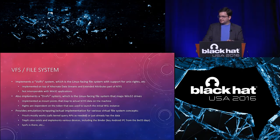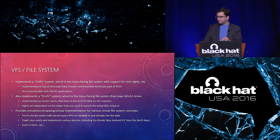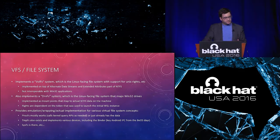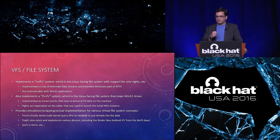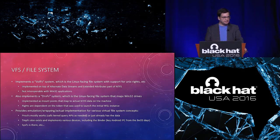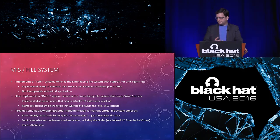The second file system model is called DriveFS or DRVFS, which is the Linux-facing system that maps your Win32 drives. Using Linux mount points, they mount your C drive, D drive, and any external USB drives in the Linux world — you can actually interoperate with the files you have there. You're not supposed to touch the Linux side of things from Windows, but the Linux subsystem can read from your regular files and vice versa.